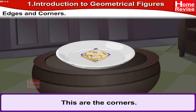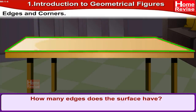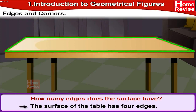Now you have understood — these are the edges and these are the corners. Now let us take a small test. See this table. Observe the surface of the table — surface means this portion. Can you tell how many edges this surface of the table has?